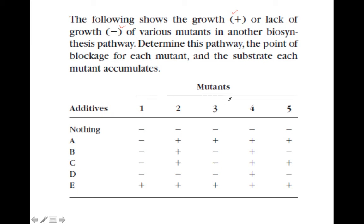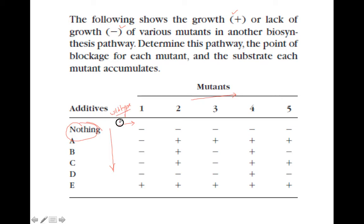All of these — 1, 2, 3, 4 — are mutants, and here they are all substrates. If you add nothing in the medium, then you will find there is no growth. If it is a wild type with nothing in the medium, there will be growth. But since all of these are mutants, there is no growth.